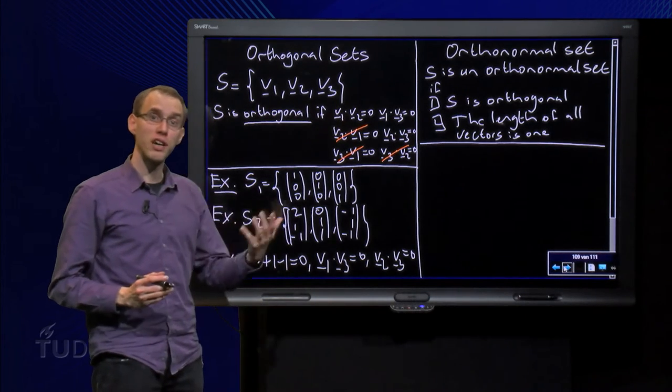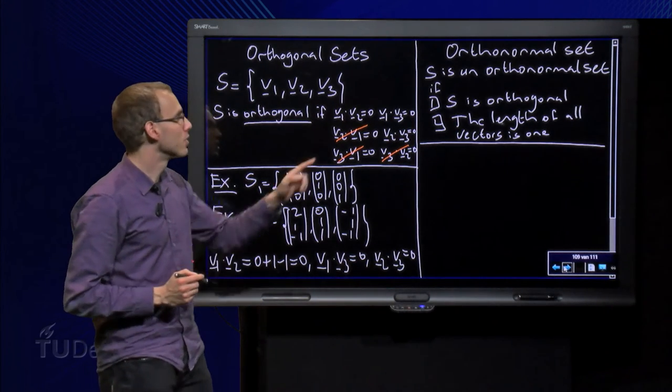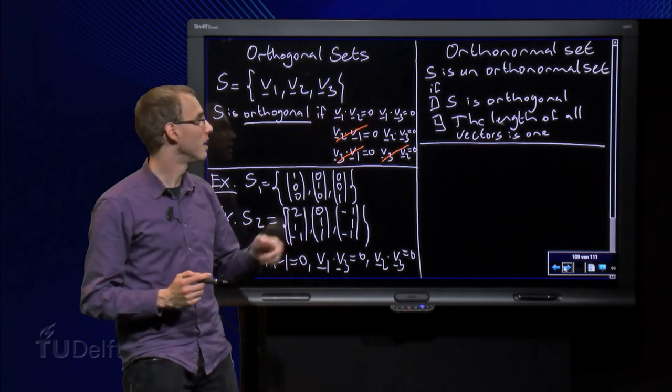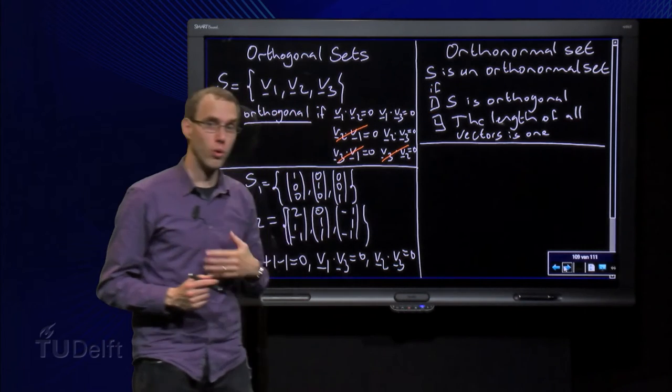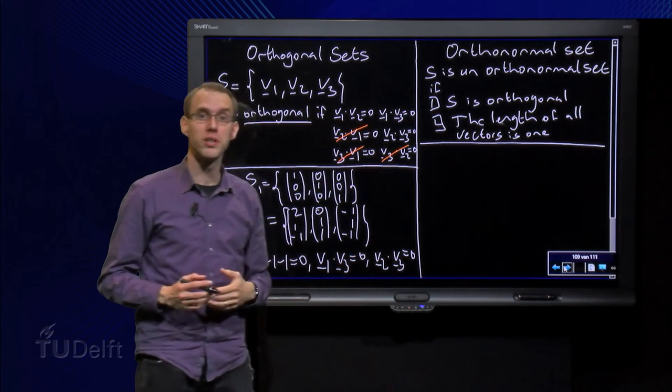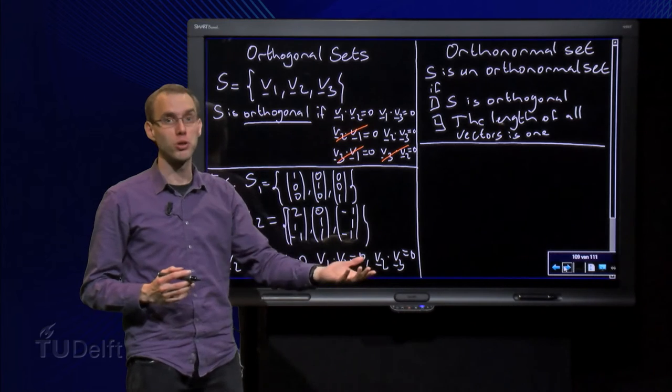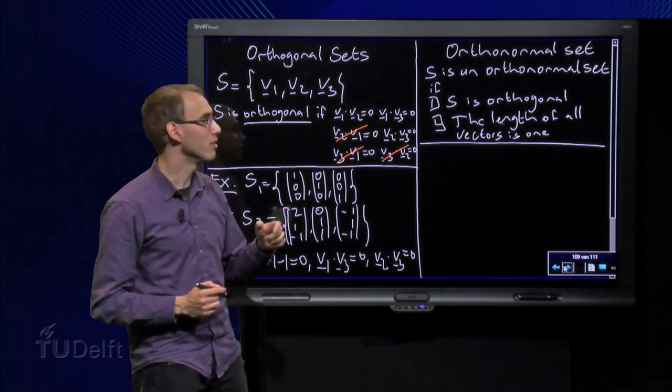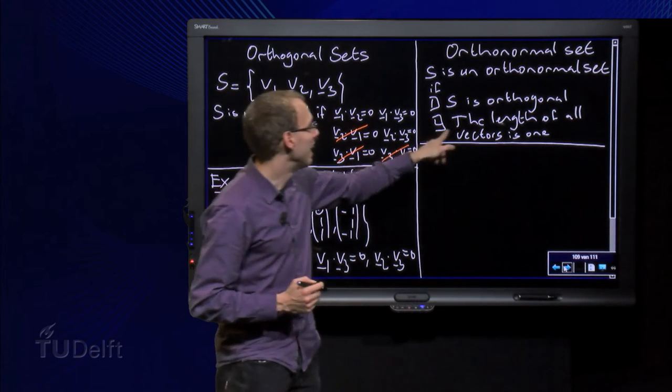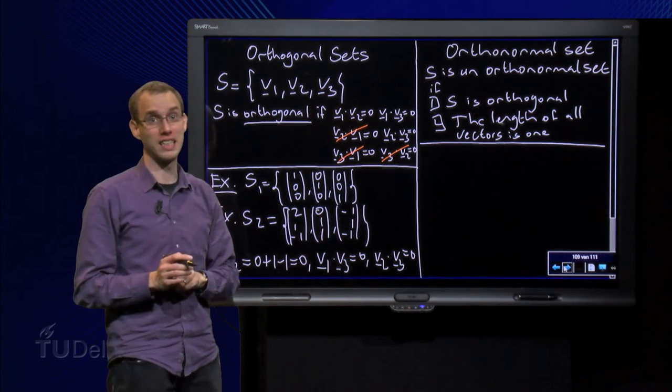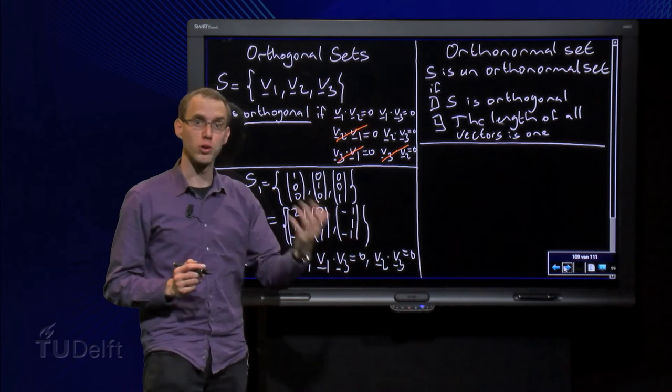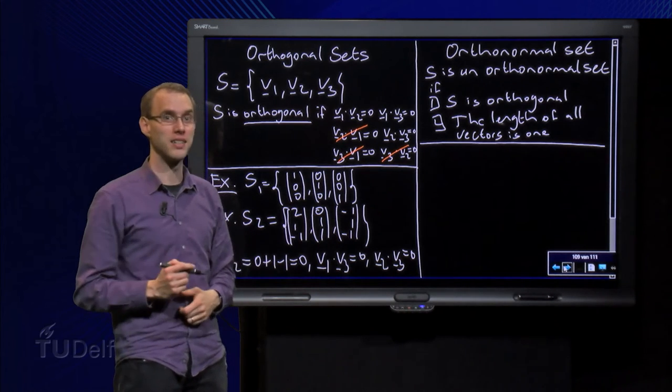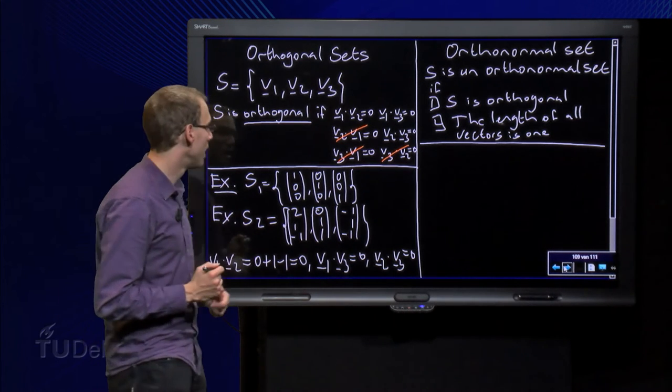We can also have even more special sets, so-called orthonormal sets. So what is an orthonormal set? Well, S is an orthonormal set if S is orthogonal, so any orthonormal set is also an orthogonal set, but you need a second condition in order for a set to be orthonormal: the length of all vectors has to be 1. So for orthonormal sets you do not only have that they are orthogonal, but also the length of the vectors needs to be 1.